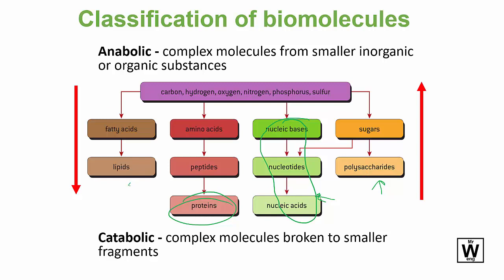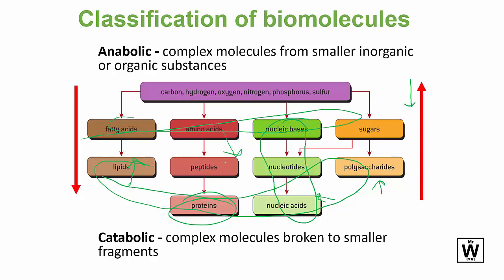Breaking these down into smaller bits is catabolic, and putting the smaller bits together into a complex molecule is anabolic. Generally, we take the complex molecules, eat them, and our body breaks them up into the small ones. Then the DNA in your body tells you how to put them back together into the types of molecules we want to use.